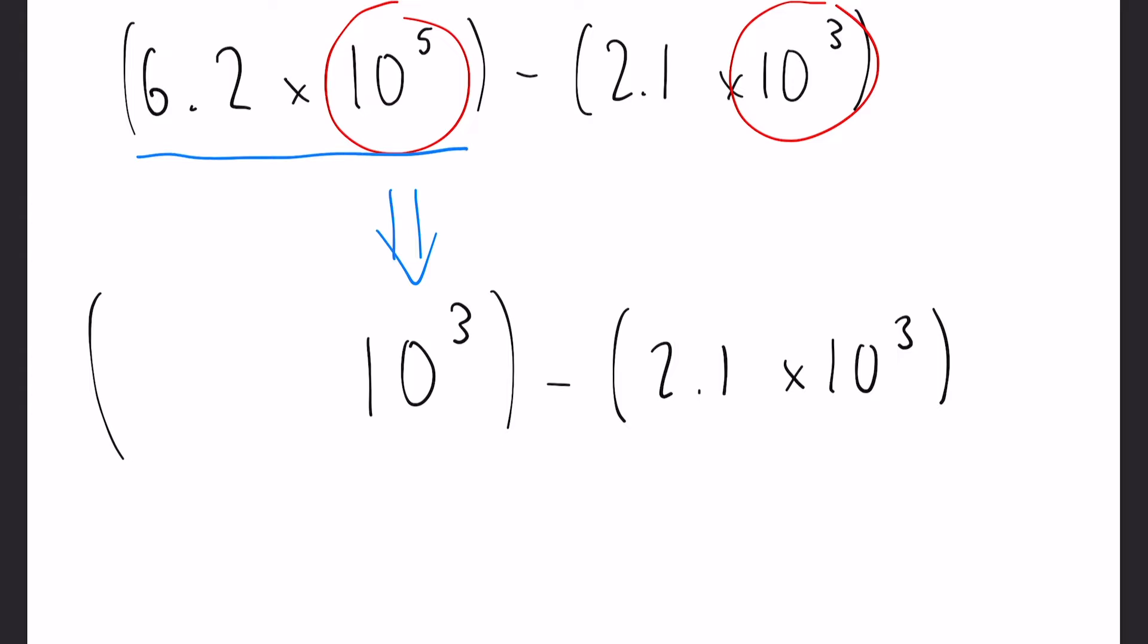Now the way you have to look at it is this is one number. So if you change the right hand component, which is circled in red here, then you also have to change the 6.2, the left hand component.